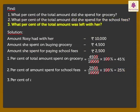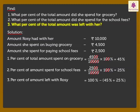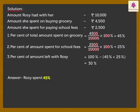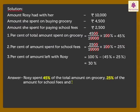Finally, to find the percent of amount left with Rosie, we subtract from the total percent the percent of amount spent on grocery and school fees, which is equal to 100% minus 45% plus 25%, which is equal to 30%. Thus, Rosie spent 45% of the total amount on grocery, 25% on school fees, and 30% of the total amount is left with her.